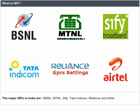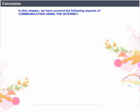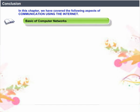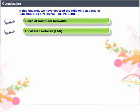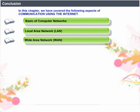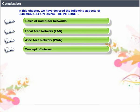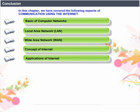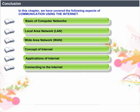Conclusion. In this chapter, we have covered the following aspects of communication using the Internet: Basics of Computer Networks, Local Area Network (LAN), Wide Area Network (WAN), Concept of Internet, Applications of Internet, Connecting to the Internet, and What is ISP.